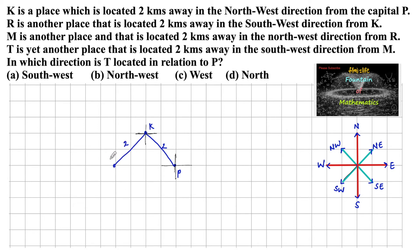We can mark this position as R. M is another place located two kilometers away in the northwest direction from R. From R, northwest means between north and west, so we mark two kilometers in the northwest direction and that position is M.